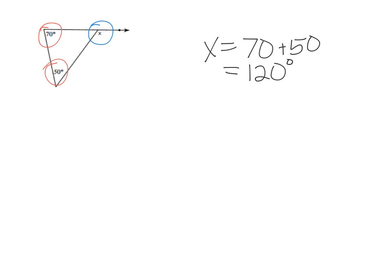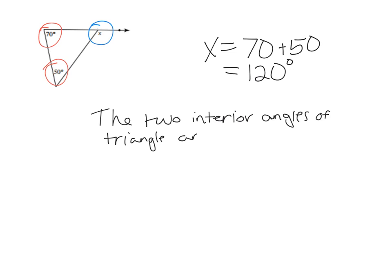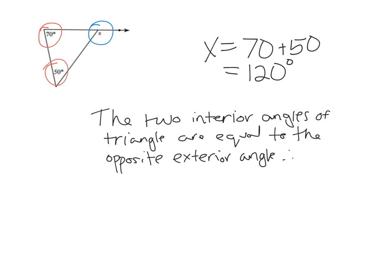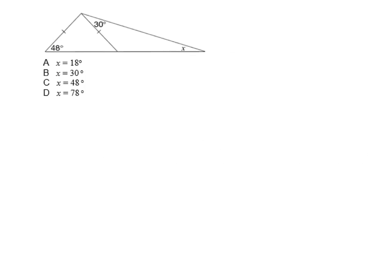Now I have to justify my answer. To justify my answer I would simply write: the two interior angles of a triangle are equal to the opposite exterior angle. Therefore, x equals 70 plus 50. And that's all I need to write for that.